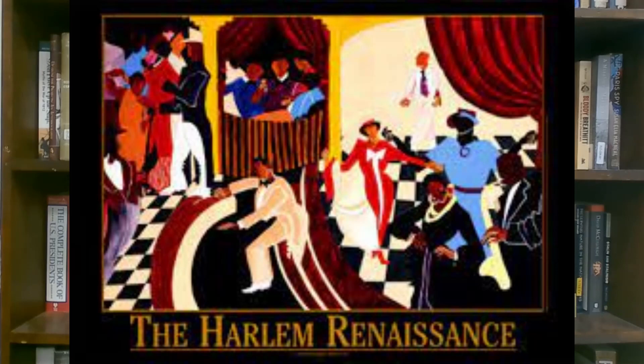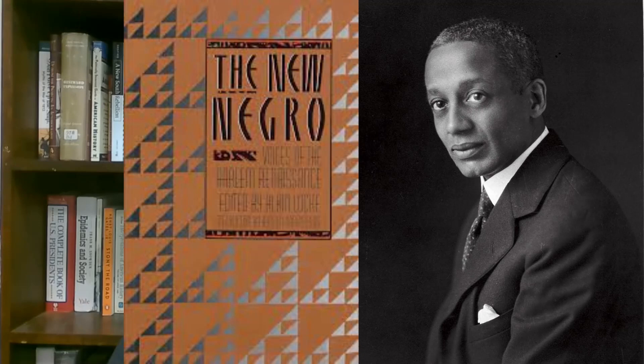Black culture began to revitalize in a movement that started from New York known as the Harlem Renaissance — an intellectual, social, and artistic explosion centered in Harlem, New York, spanning the 1920s. At the time it was known as the New Negro Movement, named after 'The New Negro,' a 1925 anthology edited by Alain Locke that put together essays, poems, short stories, and other artistic works by prominent Black artists.